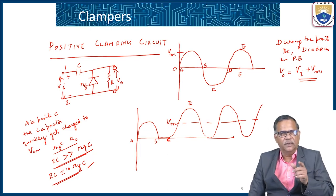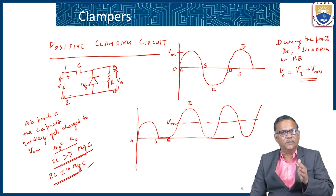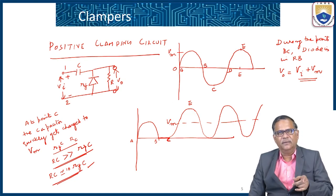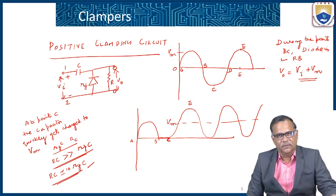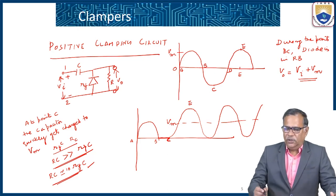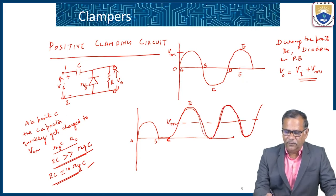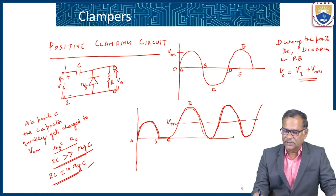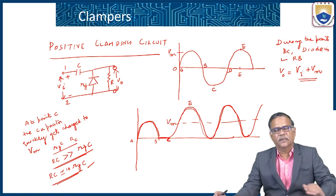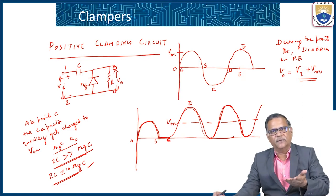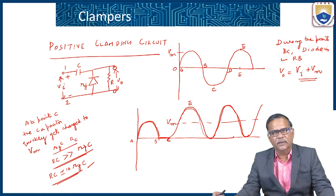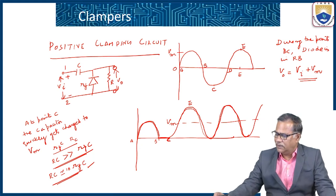The basic assumption is that the charging time constant Rf·C is far less than the discharge time constant R·C — typically R·C is 10 times more than Rf·C. The steady state response gives this shape. Initially the transient response is present but we consider only the steady state, where the output waveform has an average value of Vm and the voltage is positively clamped. This is the positive clamping circuit.